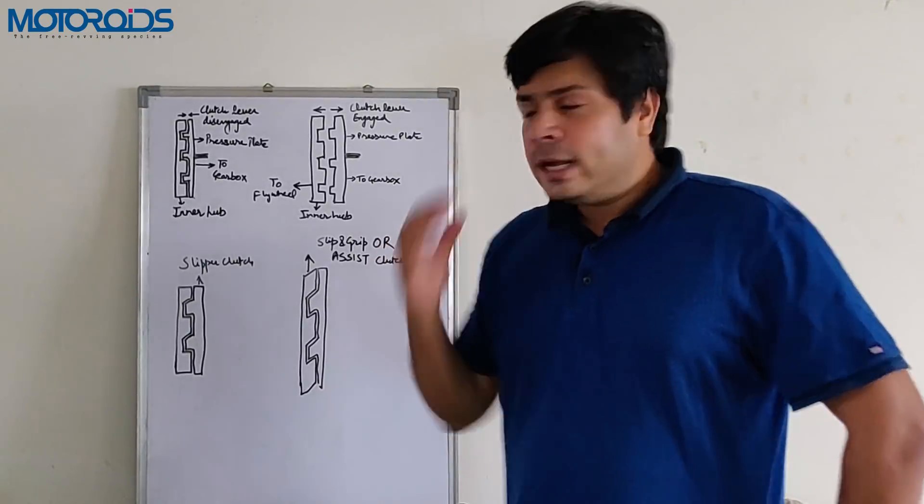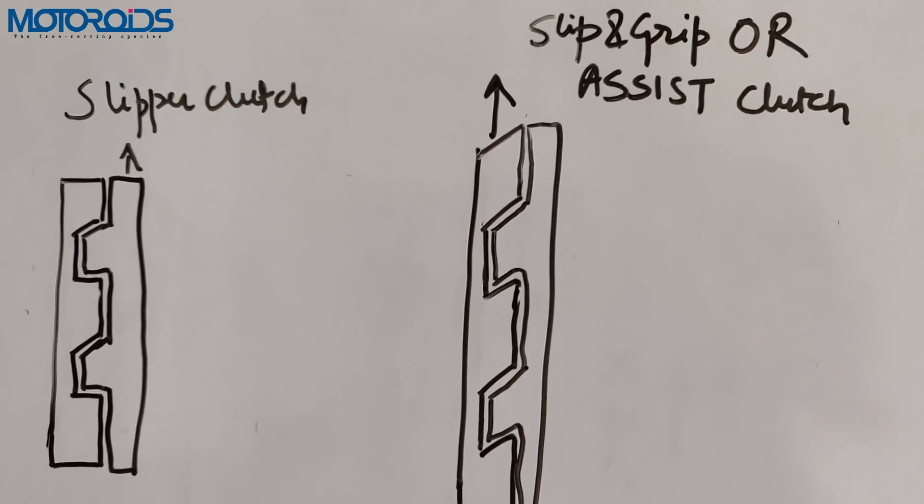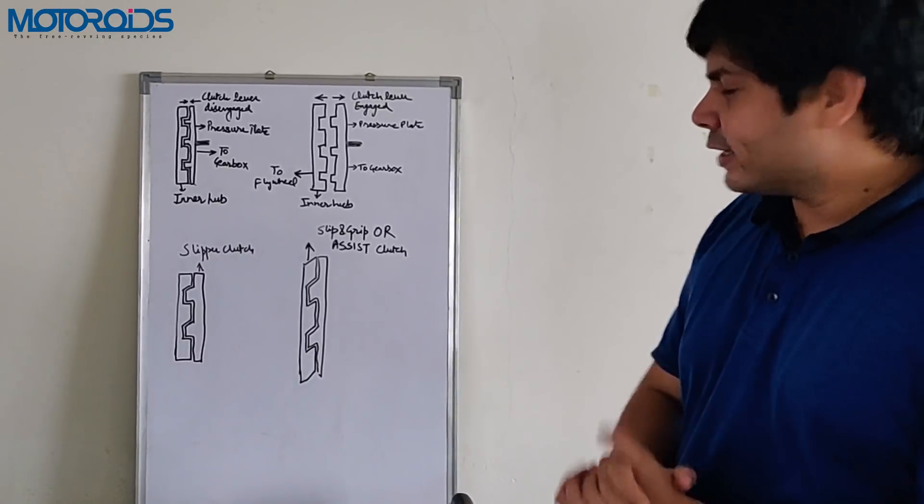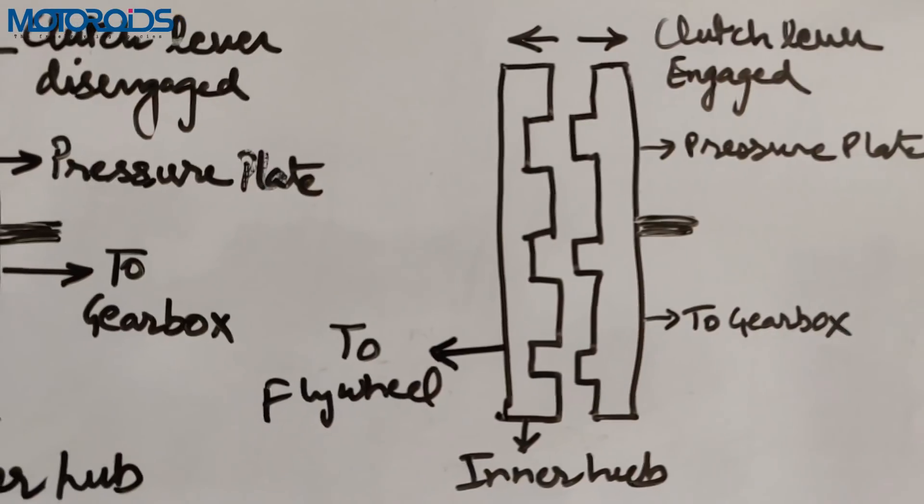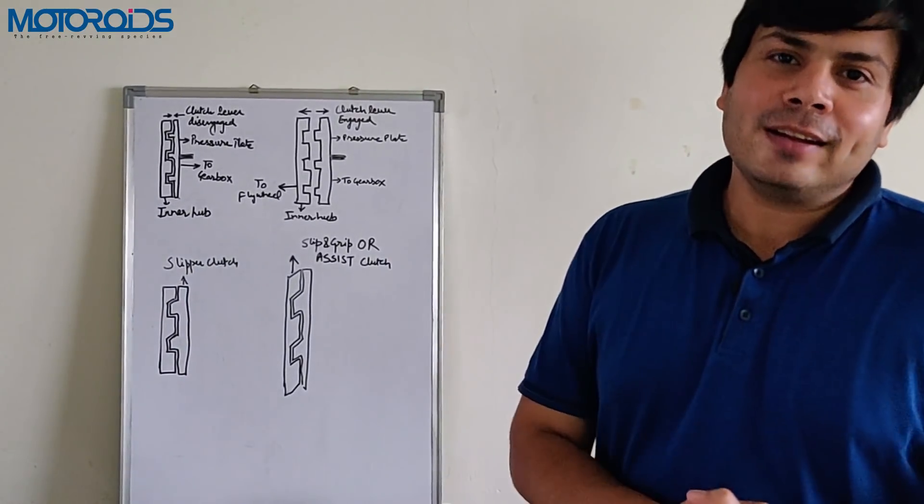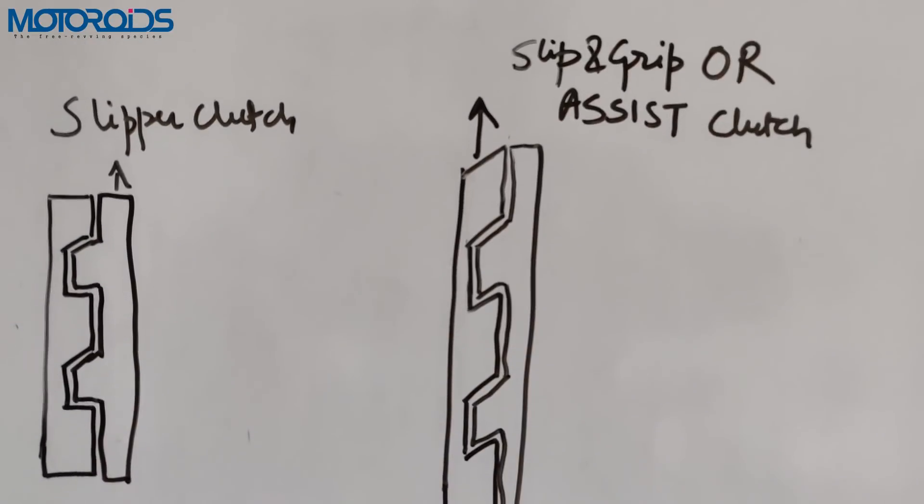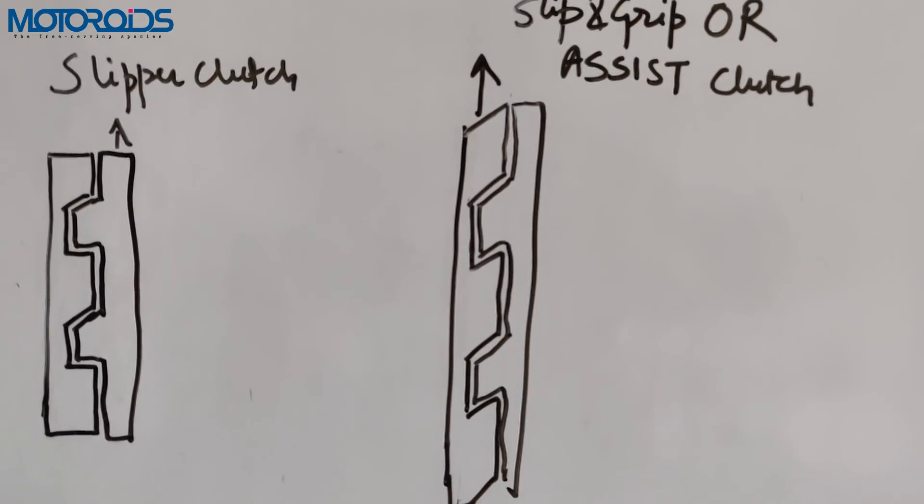That's how slipper clutch and slipper grip or assist clutch works and we hope that this video was useful to you in the sense that it helped you understand what exactly is a slipper clutch and slipper grip or assist clutch, and the questions that you had in your mind got answered to an extent. If you like the video do hit the like button, subscribe to our channel, and do share this video with your friends who might be interested in understanding better how exactly slipper clutch works and the workings of it.